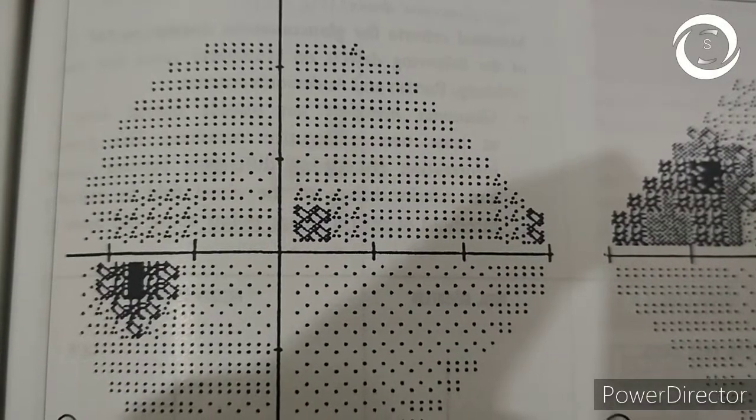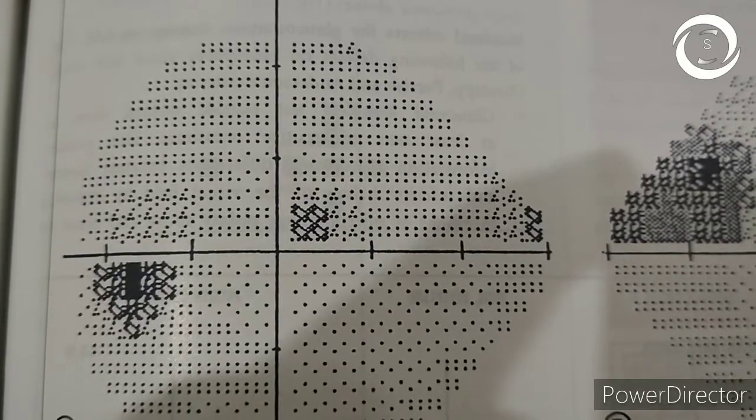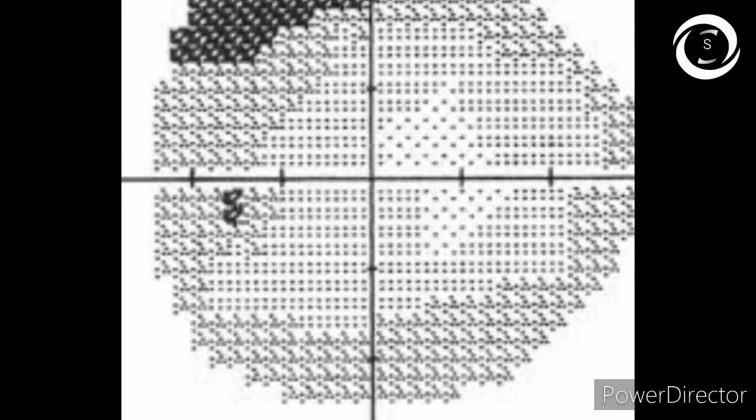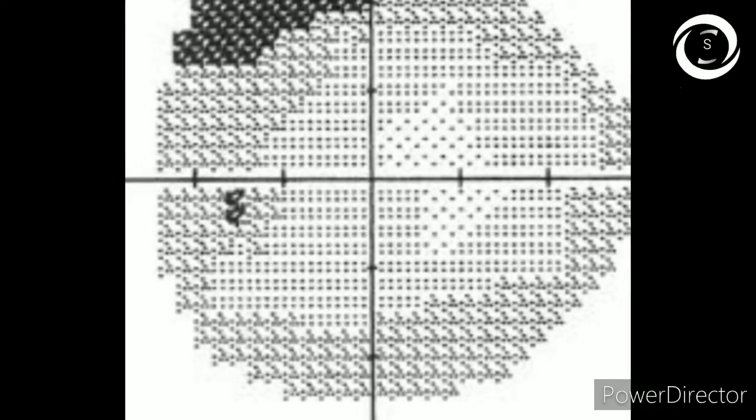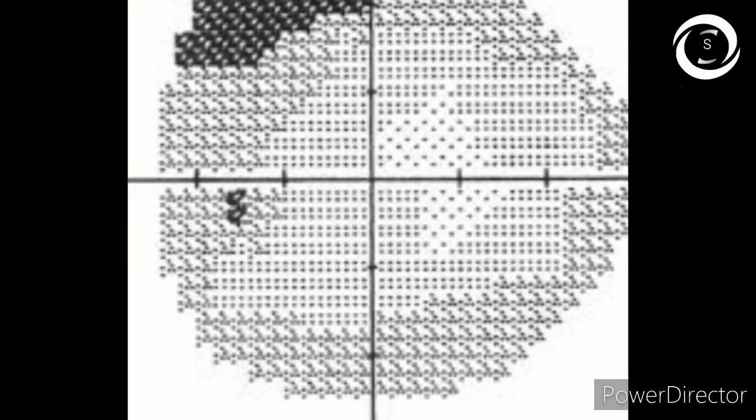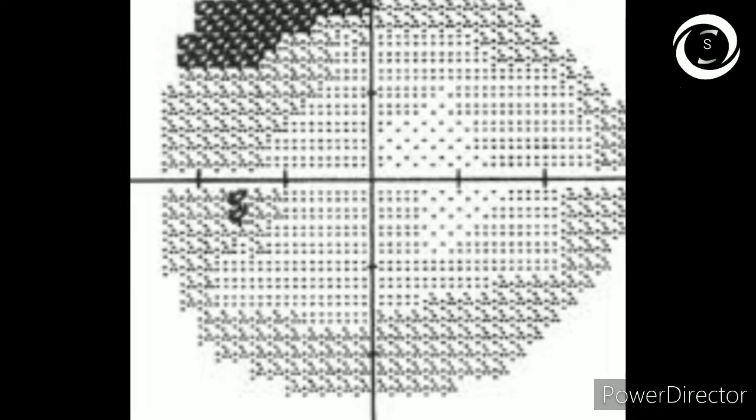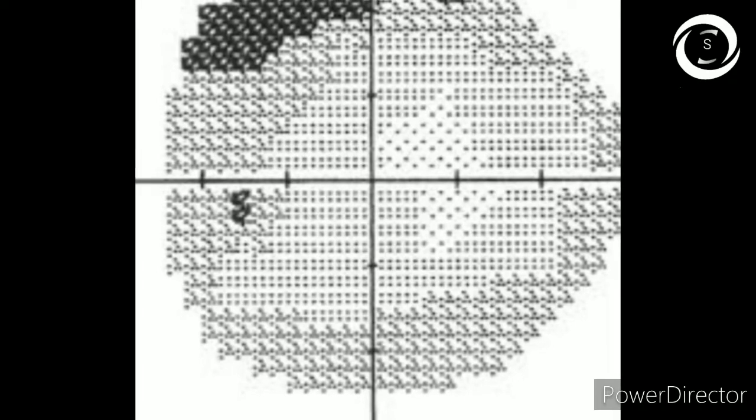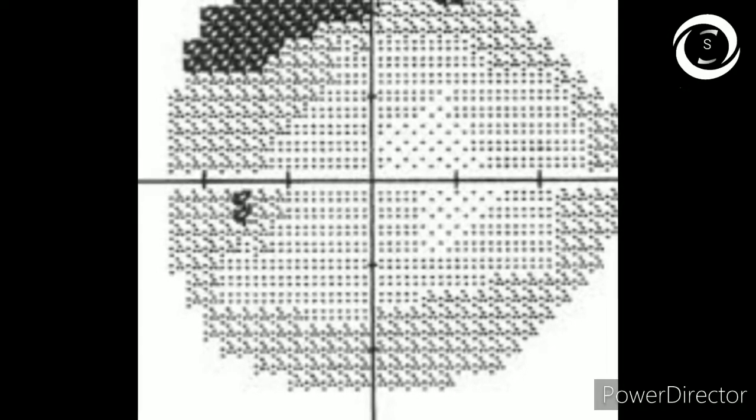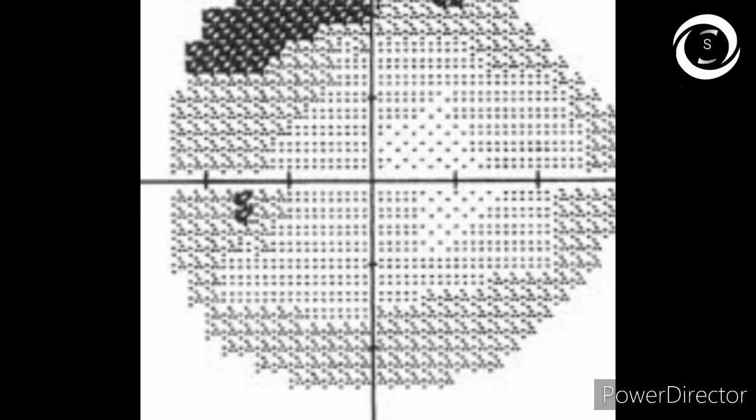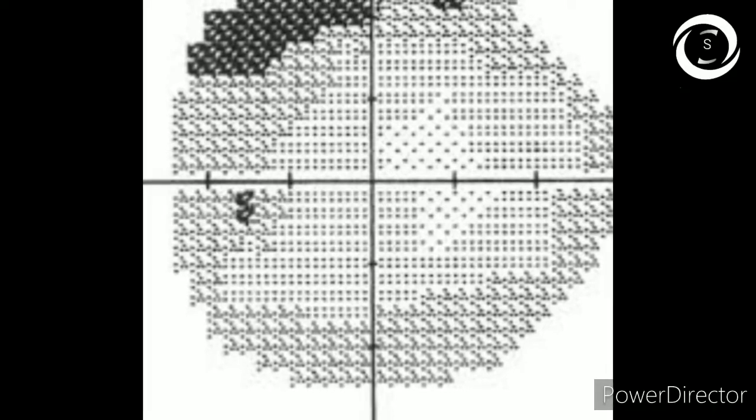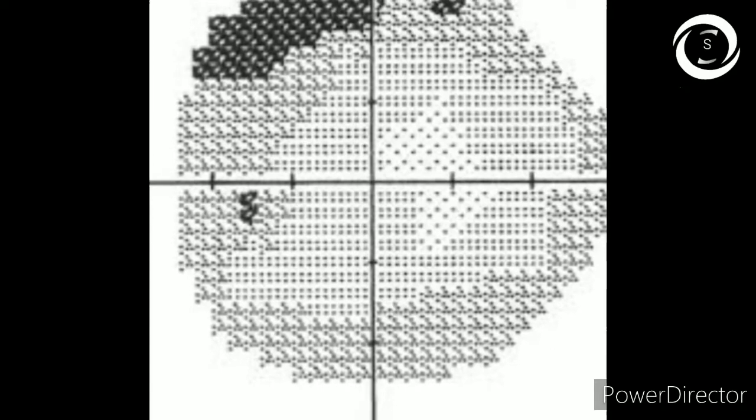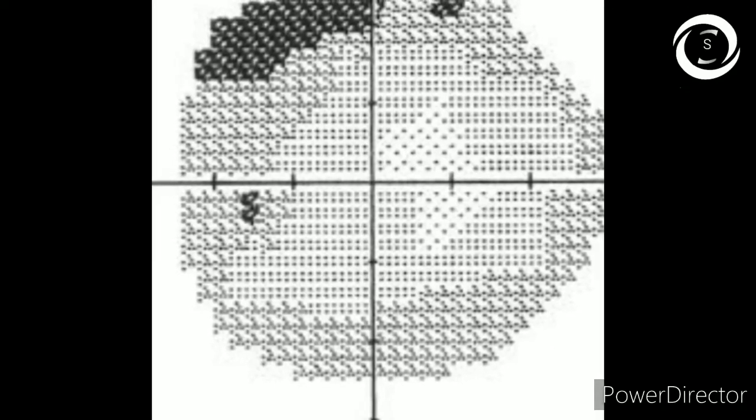Now look at the temporal wedge defect. How to differentiate temporal wedge from nasal step? Orientation of the visual field chart is very important. First locate the blind spot. Here it is on the left side. The blind spot is always in the temporal field, so the wedge defects are also in the temporal field. You can see superior temporal wedge defect clearly.